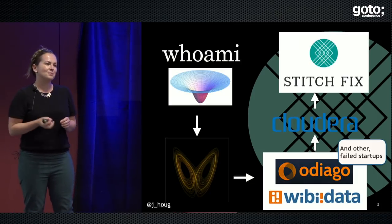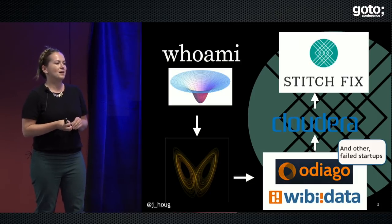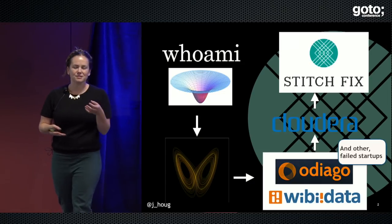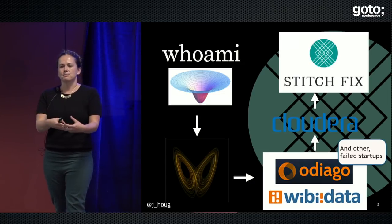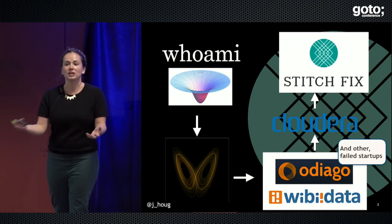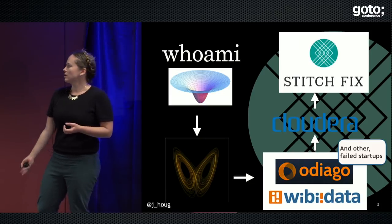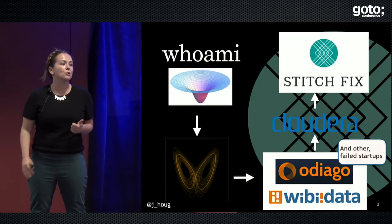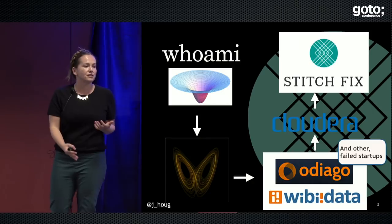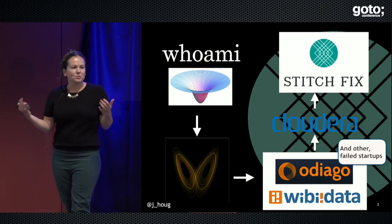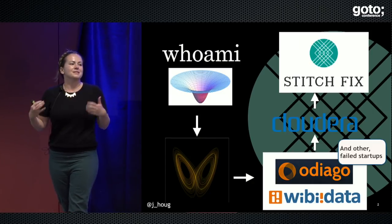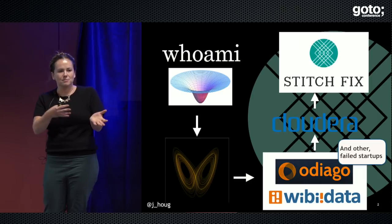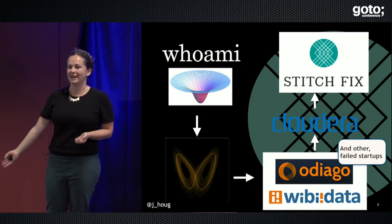But despite the name 'applied math,' applied math did not feel very applied to me. I frequently would ask questions like, how would I take this model and actually put it in a system? So I was in a PhD program and decided to leave — I wanted to go work in industry and figure out: how do you deploy a model? What does it mean to deploy a model? How do you actually take this thing that you've built and make it practical and used in a system?